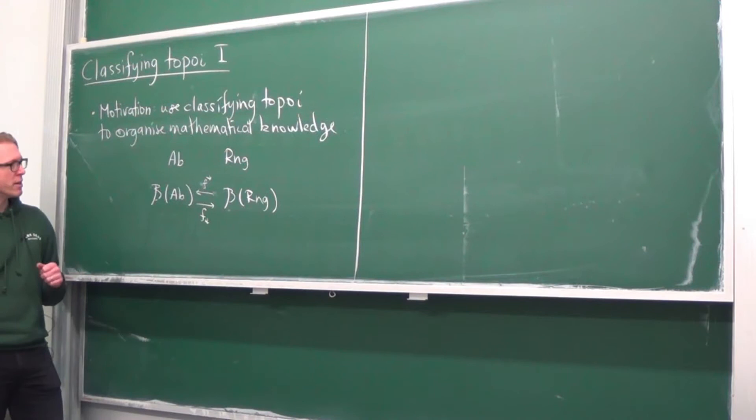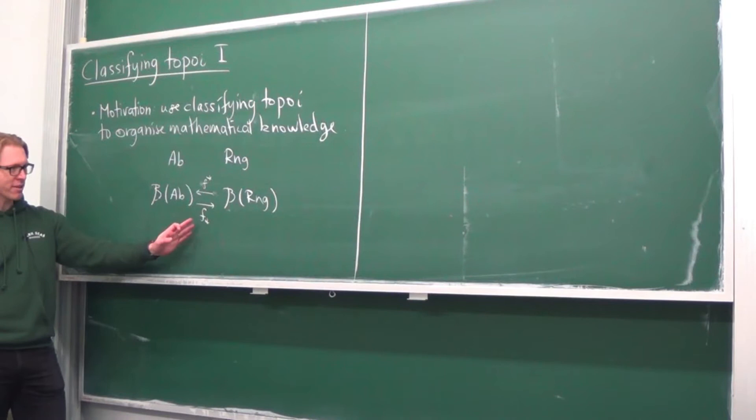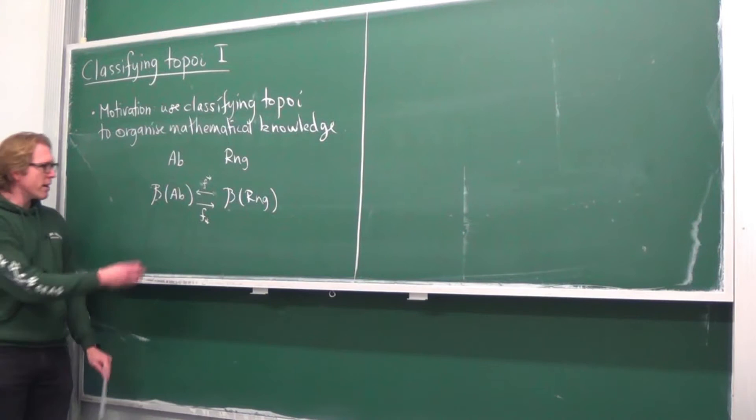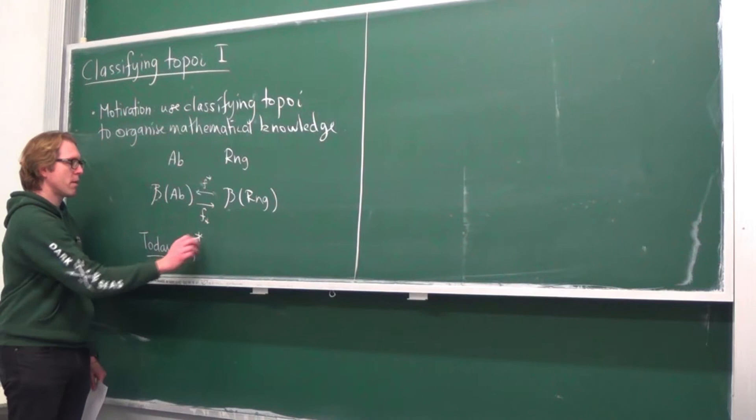If we want to understand this role of classifying topoi, following the general philosophy of category theory — that it's the morphisms that matter, not the objects — it's really about these functors. That means we need to get some handle on how to think about these functors, and today is about the left adjoint part.